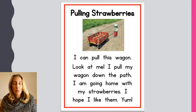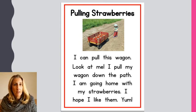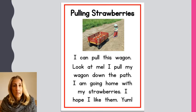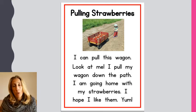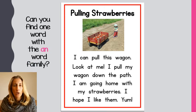Let's try it again with another short text. The name of this short text is 'Pulling Strawberries.' I think this little girl went strawberry picking. I think she needs to pull something — it looks like the wagon. 'I can pull this wagon. Look at me. I pull my wagon down the path. I am going home with my strawberries. I hope I like them. Yum.' Now let's go back and see if we can find a word with the 'an' word family.